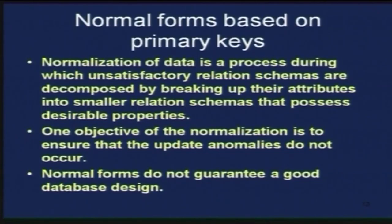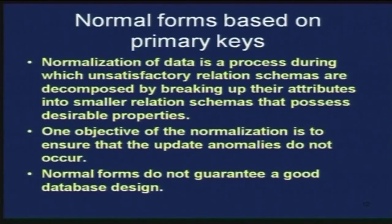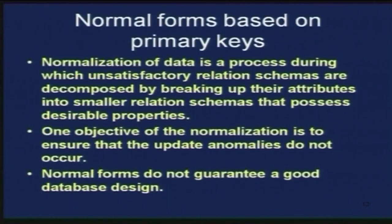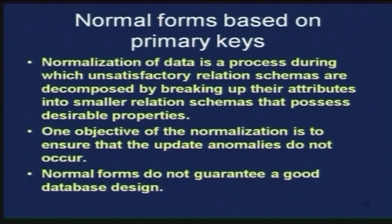Normalization of data is a process during which unsatisfactory relation schemas are decomposed — we take a relational schema and break up its attributes into smaller relation schemas that will hopefully possess desirable properties. If you have a relation with 10 attributes belonging to the same entity and that schema has unsatisfactory properties, you can decompose it. You do it in such a way that the smaller schemas have the necessary properties. One objective of normalization is to ensure that update anomalies — modification, insertion, and deletion — do not occur.